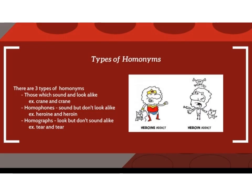Types of homonyms. There are three types of homonyms. The first one is homonyms — a homonym is a word that sounds the same as another word but differs in meaning. Example: crane and crane.